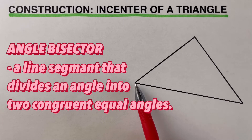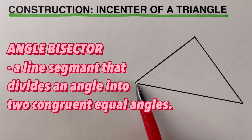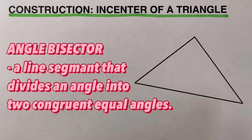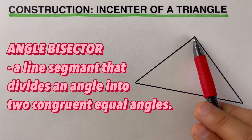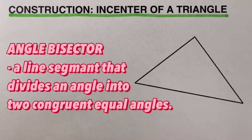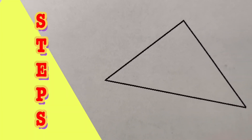When we say angle bisector, that is a line segment that divides a given angle into two congruent angles. What we are going to do is draw a line segment that will cut each angle into two equal angles — we are going to bisect the angle at each of these vertices. Bisect means we divide the angle into two equal congruent angles.